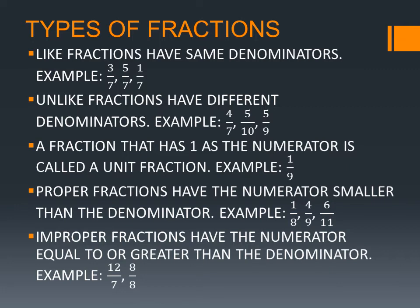Proper fractions have the numerator smaller than the denominator. For example, 1 by 8, 4 by 9, 6 by 11. We can see that in these three fractions, the numerator is smaller than its denominator.